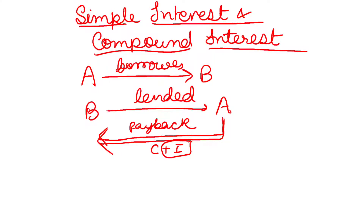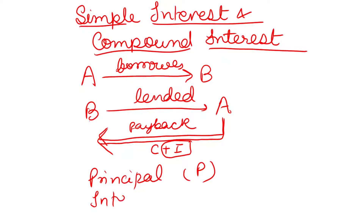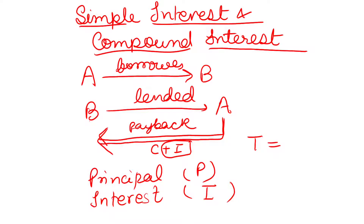The amount which is borrowed by A from B is called the principal, denoted by capital P. The amount which is paid over and above the principal to the lender by the borrower is called interest. The sum of the interest and principal is called the total amount, which has to be paid back by A to B. That is P plus I — that is the total amount.